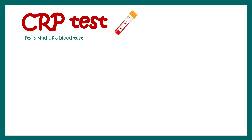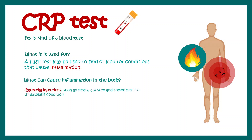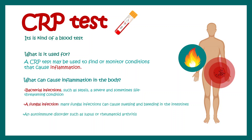In this video we'll talk about the C-reactive protein test, or CRP test, which is a blood test. The CRP may be used to monitor the inflammatory status inside your body. Inflammation can be caused by a bacterial infection, a fungal infection, or an autoimmune disorder such as lupus or rheumatoid arthritis.